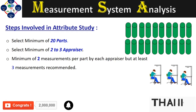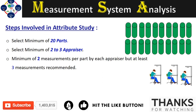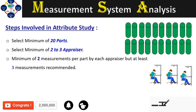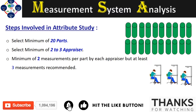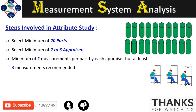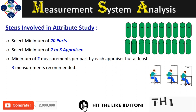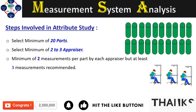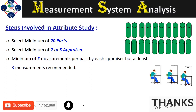The steps involved in an attribute study: typically we select a minimum of 20 parts, but it is recommended to have at least 30 parts. The parts should be put in random order. Select at least two appraisers, but it is recommended to have at least three, and each appraiser measures each part two to three times. Of the parts selected, it is recommended that 80% of the total parts be within the specification limit — so if you select 20 parts, 16 should be good parts and 4 should be bad parts.